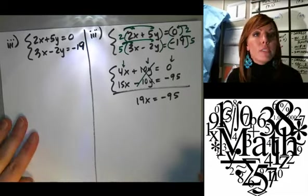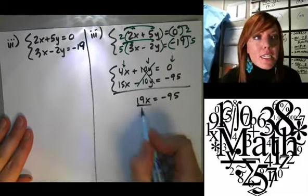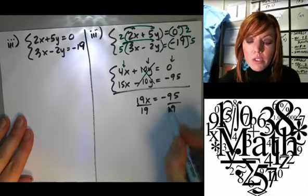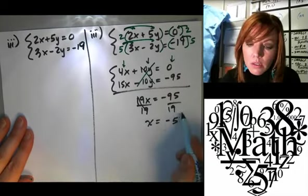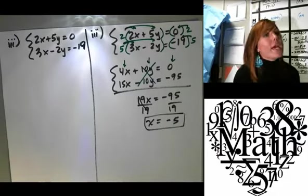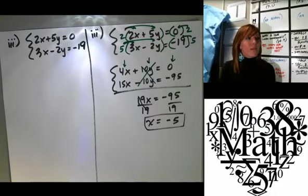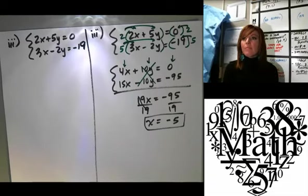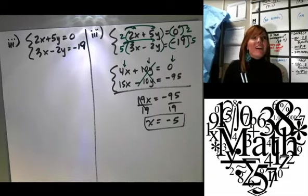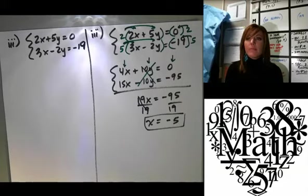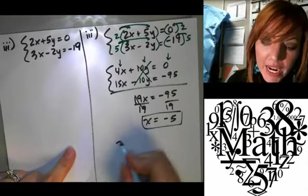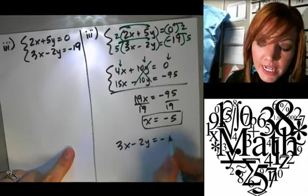Okay. Then what? Plug it in. Plug it in. Plug it in. Okay. Oh, all right. Underhill's awake today. He's always awake. Okay. Plug it into what? The bottom one. Okay. So 3x minus 2y equals negative 19. But does it matter whether we plug it into the top or the bottom? Nope.